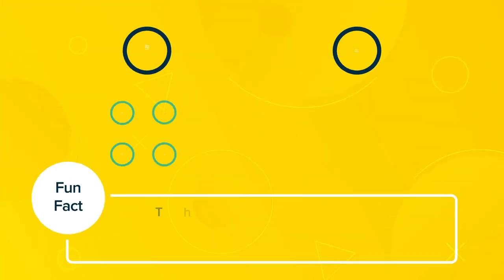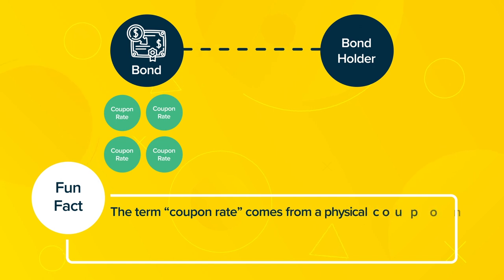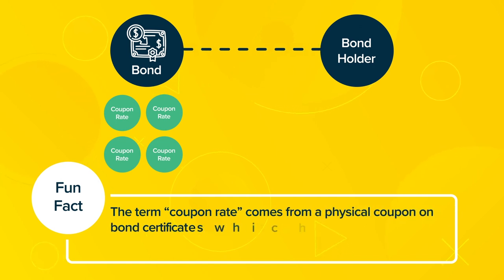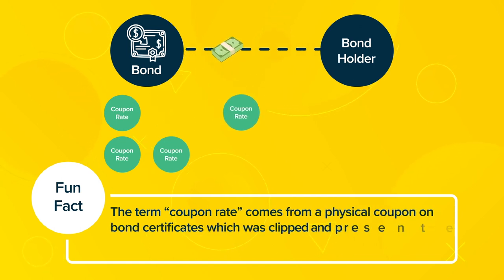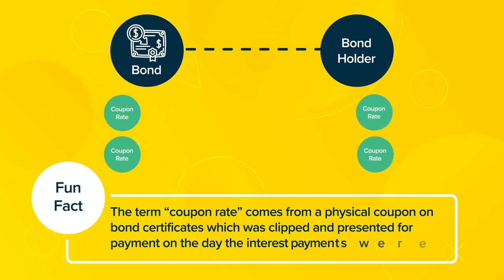Fun Fact: The term coupon rate comes from a physical coupon on bond certificates which was clipped and presented for payment on the day the interest payments were due.